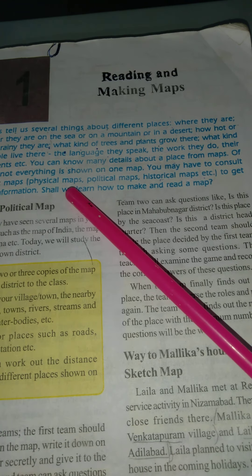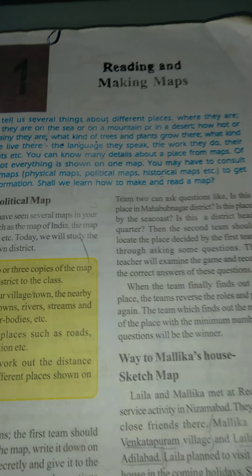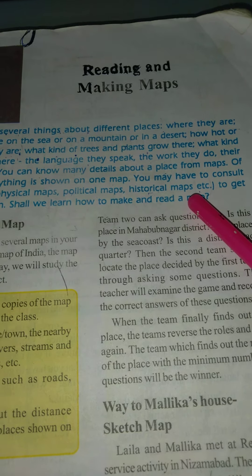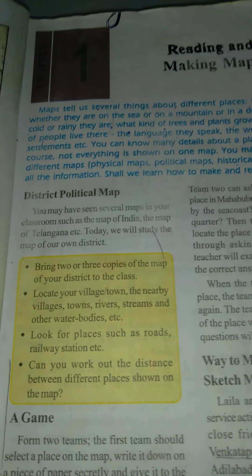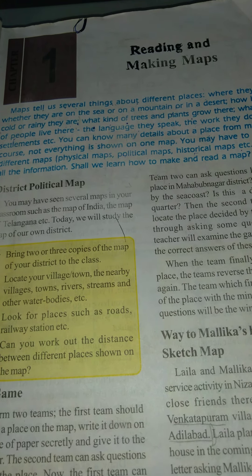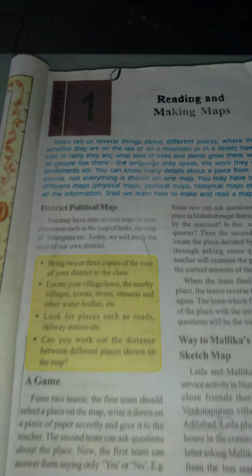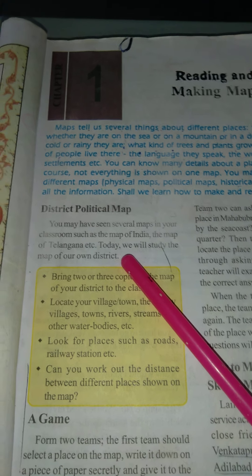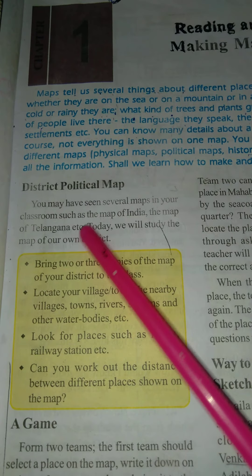You may have to consult different maps — physical maps, political maps, historical maps, etc. — to get all the information. Physical maps show physical features like mountains and different countries and boundaries. Political maps show area boundaries and country details. Historical maps show historical places. We will also look at district political maps of Telangana.